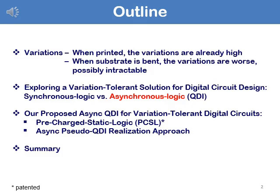The problem we are trying to address today is about variations. We all know that when we print an element, a circuit, and a system, the variations are going to be very large. And what happens to the variations when we bend? What usually happens is that the variations become much worse and even possibly intractable.